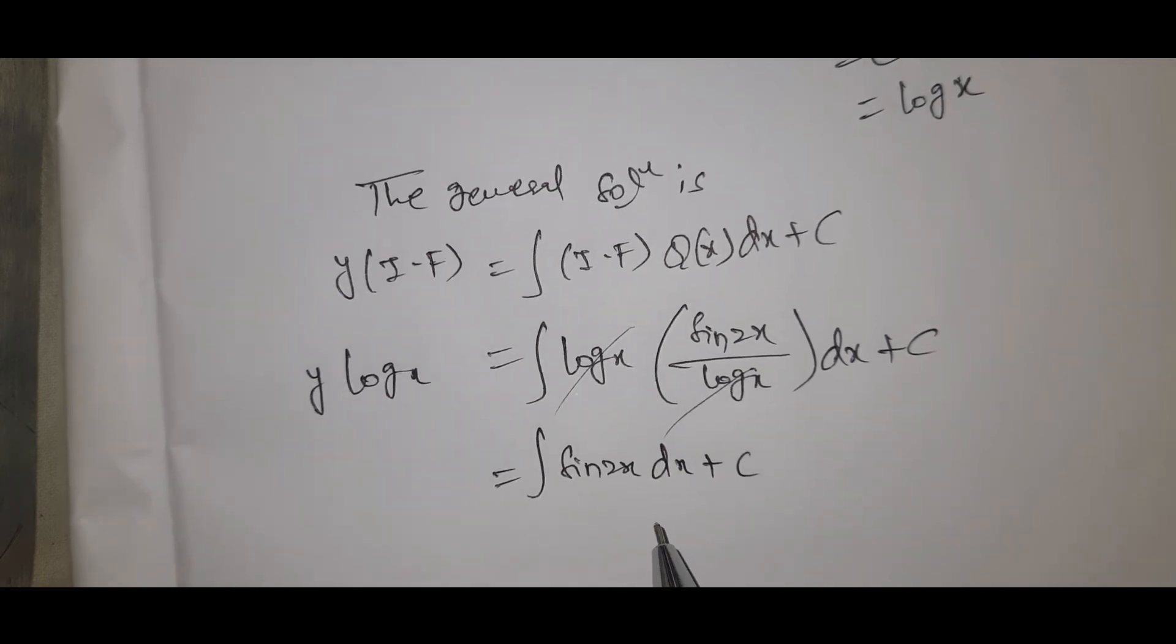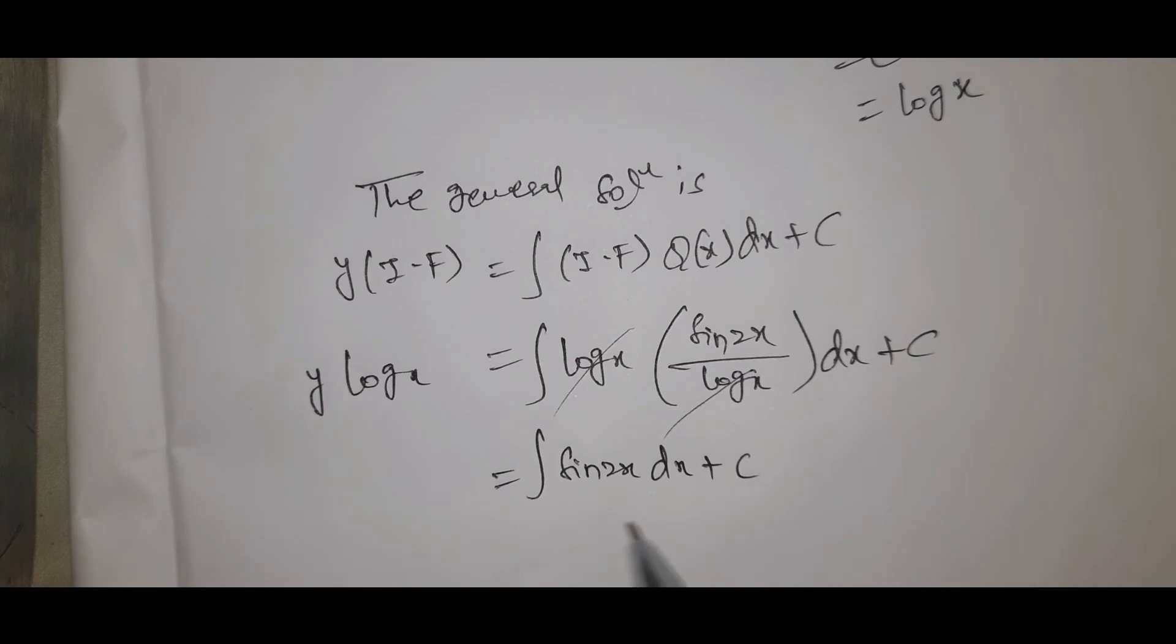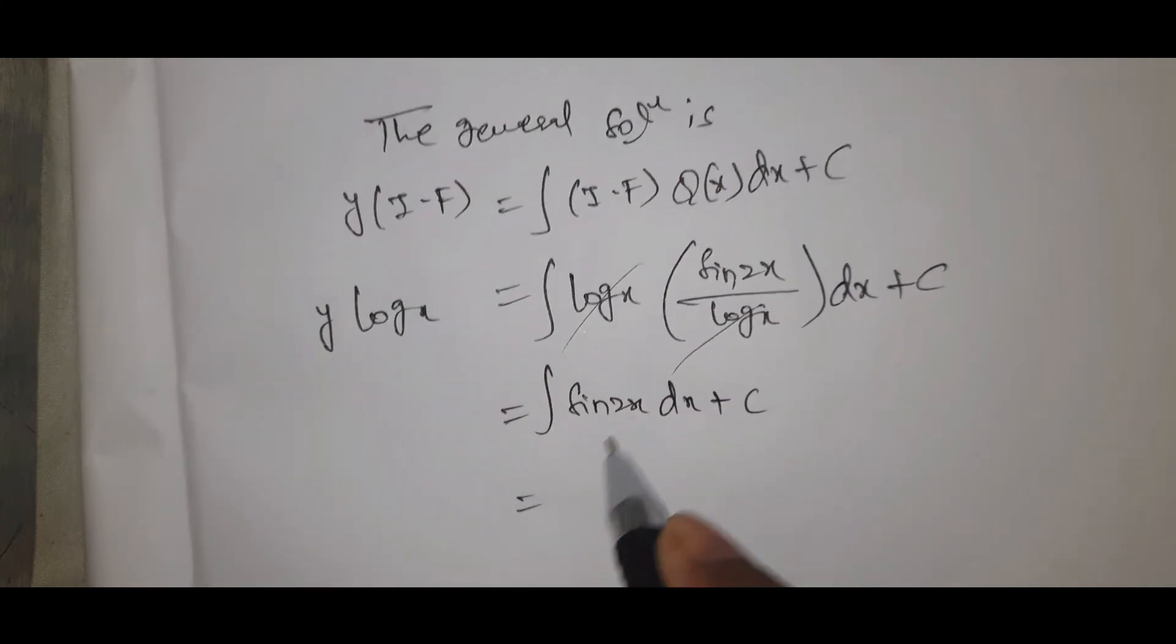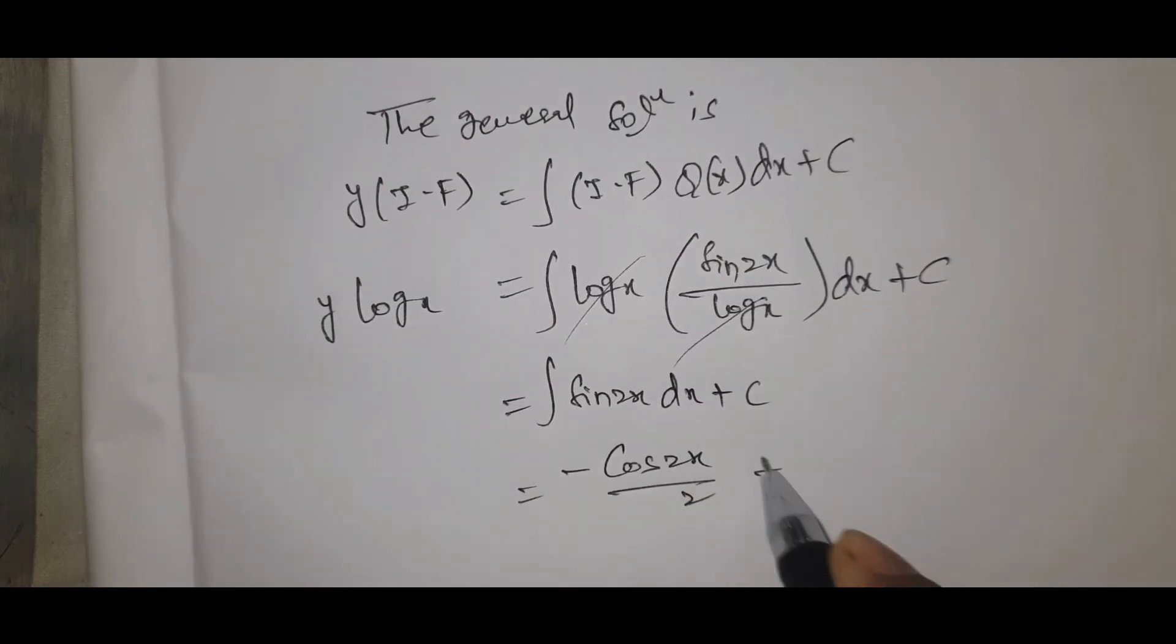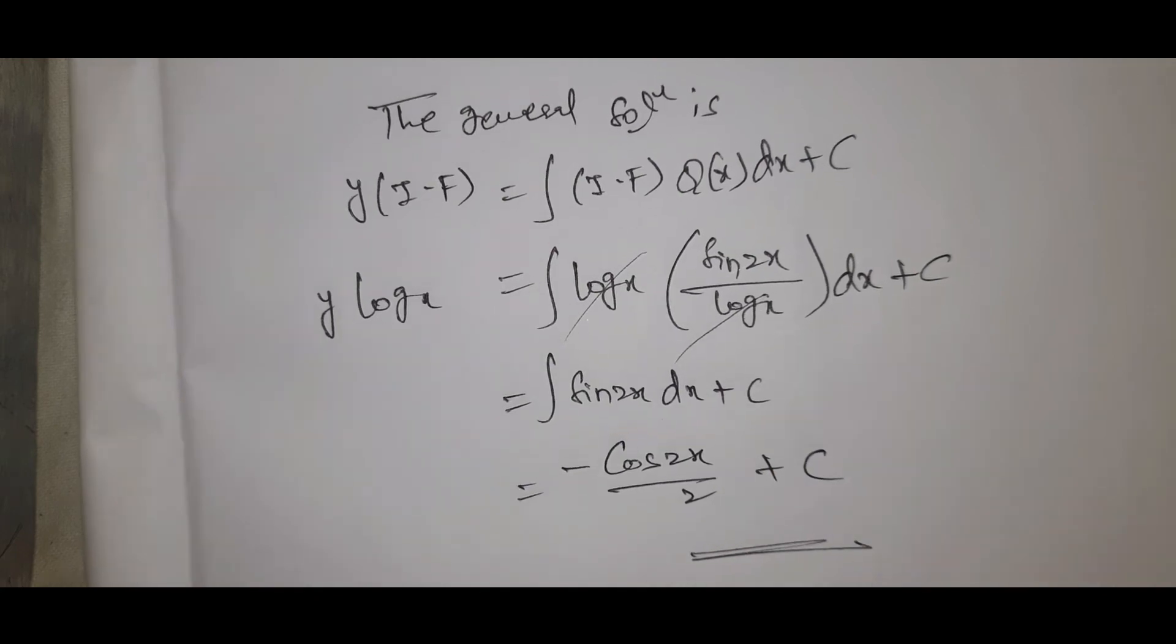That equals integral sin 2x dx plus c. Integral sin x, what is that? Minus cos x. So we have minus cos 2x by 2 plus c. That is the general solution.